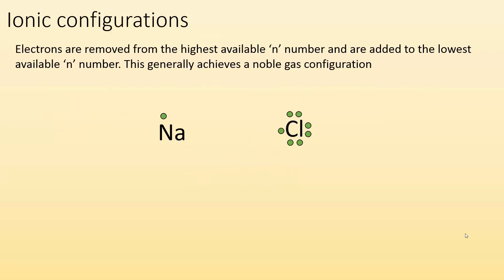So ionic configurations, some rules. Electrons are removed from the highest available n number and are added to the lowest available n number. This generally achieves a noble gas configuration. So if we take a look at sodium...